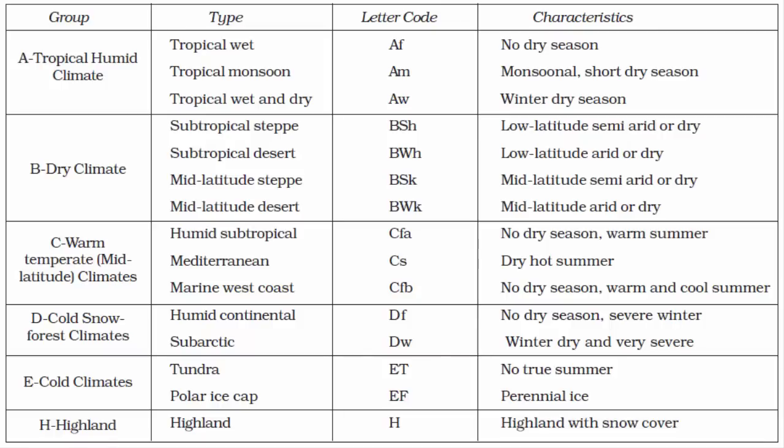In this video, we'll get to know about the second type under Köppen's climate classification, which is group B, referred to as dry climate. The capital letter B refers to dry climate. Now let's get to know about dry climate in general.